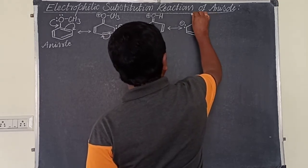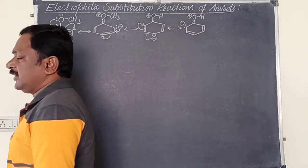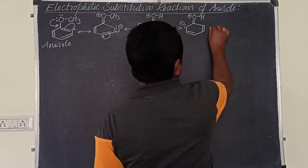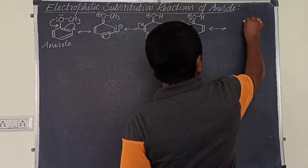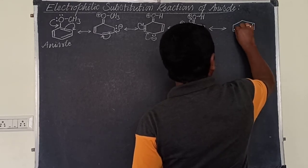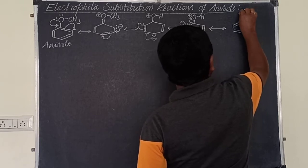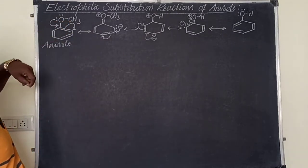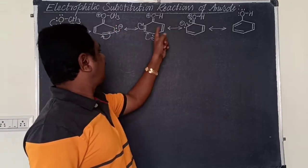So, these are the resonance structures of anisole. Once these electrons are delocalized and then delocalized back towards the oxygen atom, the alkoxy group releases electrons, increasing the electron density at the ortho and para positions.